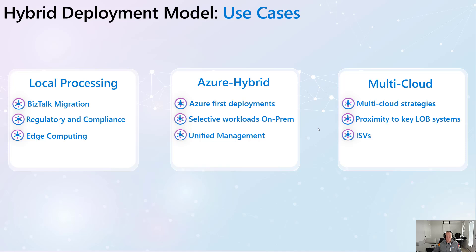We definitely see this in the energy sector. Another use case — and in my mind probably the best one — is the Azure hybrid scenario, where customers deploy their workloads to Azure first and then have selective workloads they want to operate on premises. We often see use cases where customers have confidential computing needs and would prefer to have some workloads on prem in their own storage, while continuing to run corporate use cases in Azure.